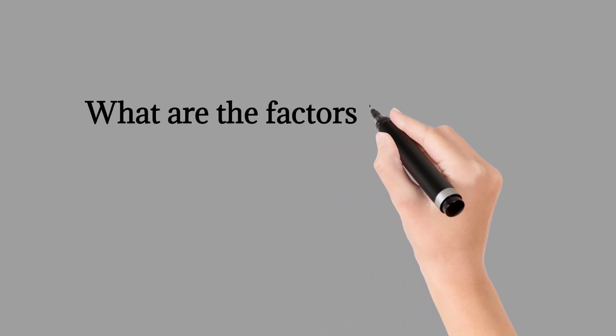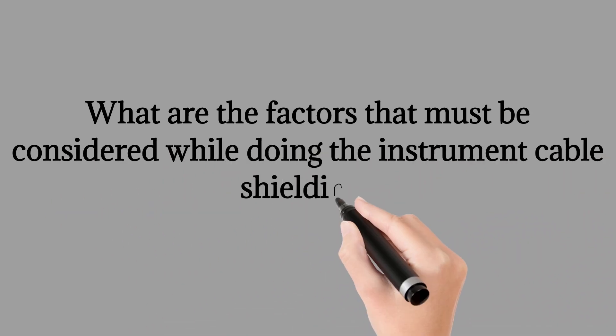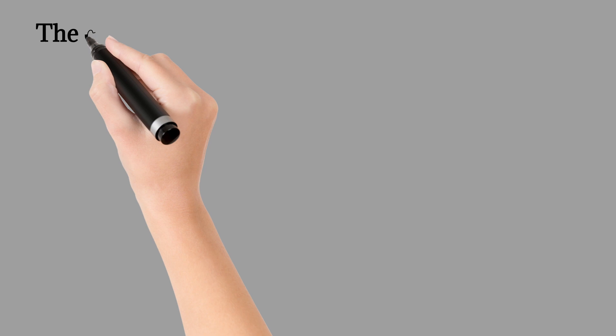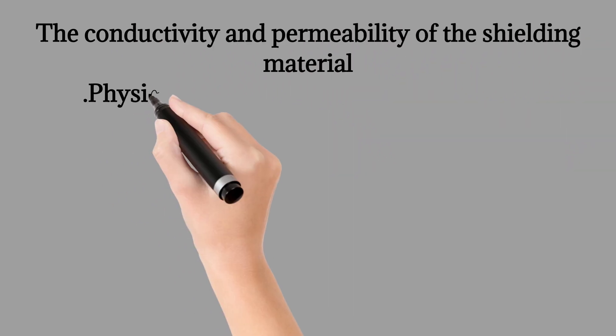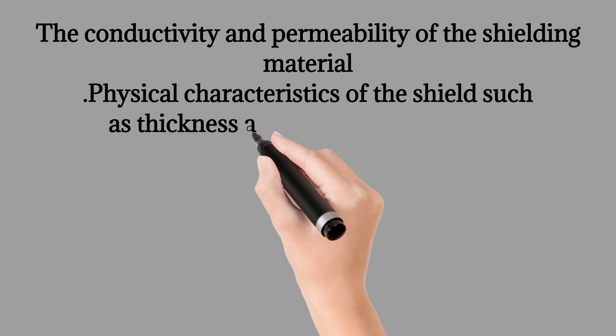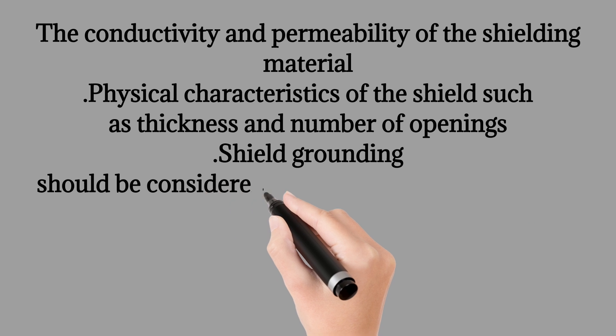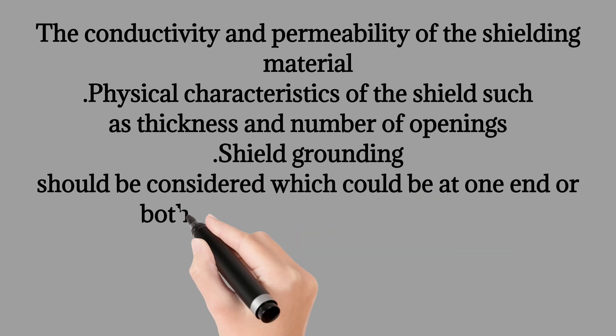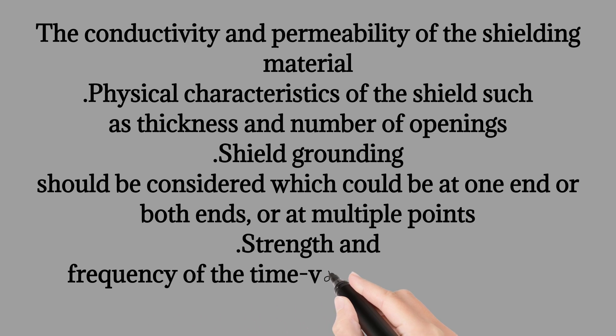What are the factors that must be considered while doing the instrument cable shielding? The conductivity and permeability of the shielding material, physical characteristics of the shield such as thickness and number of openings, shield grounding should be considered which could be at one end or both ends or at multiple points, strength and frequency of the time-varying magnetic field.